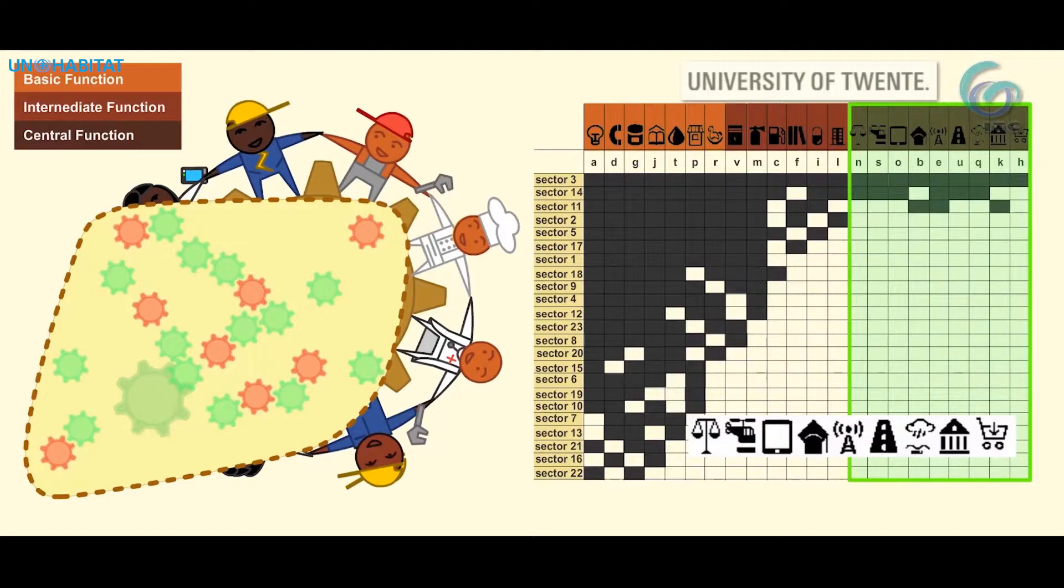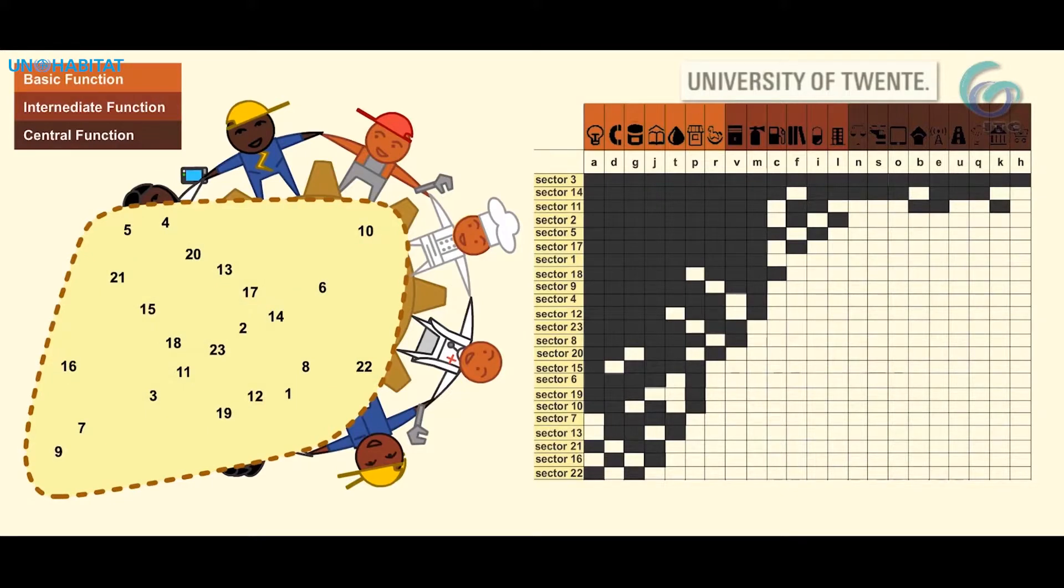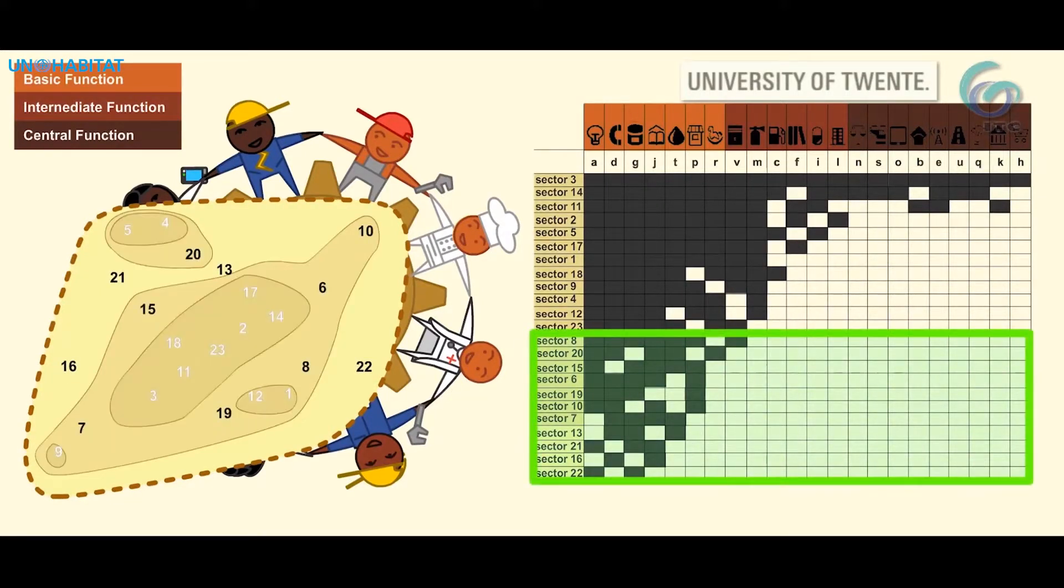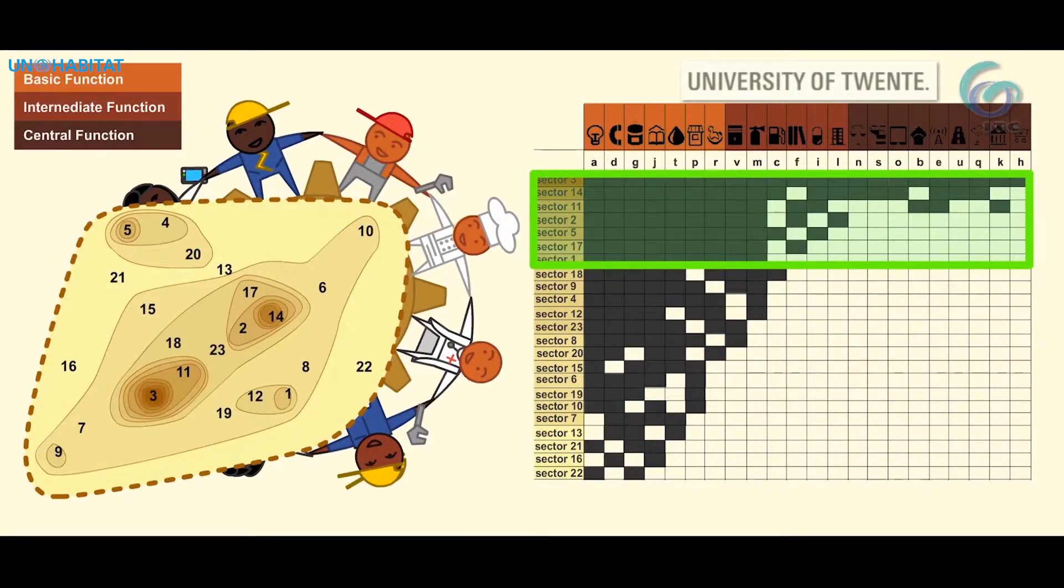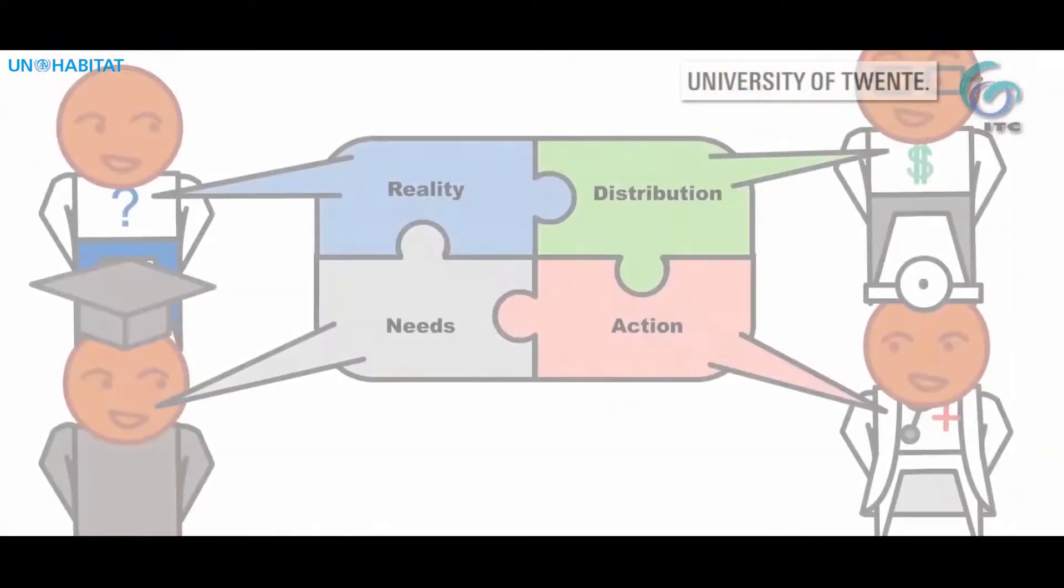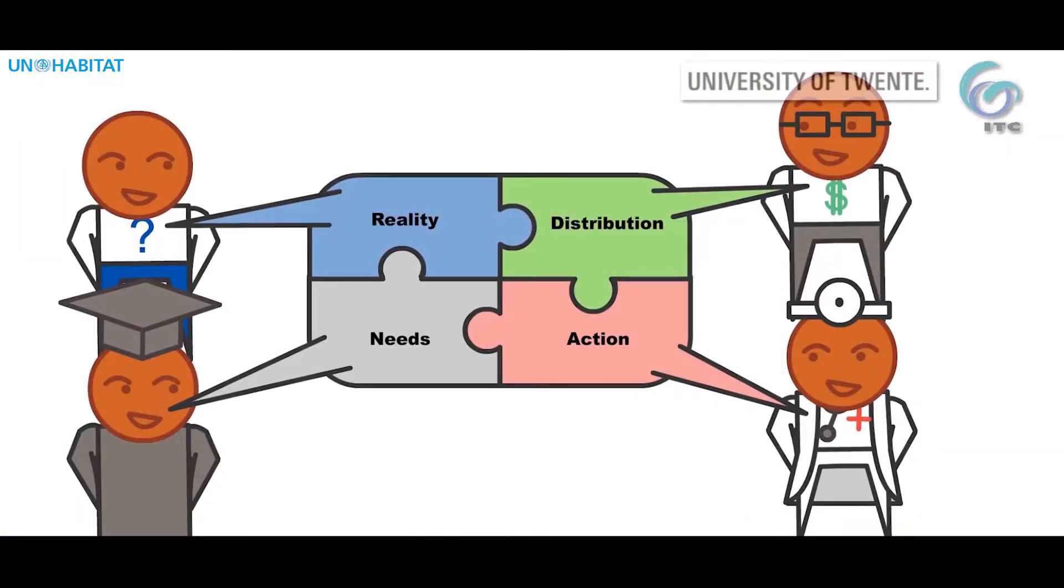We can show the hierarchical network of settlements by mapping the hierarchy and thus find local, intermediate, and central urban centers. With the matrix of functions, we can understand four things.